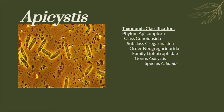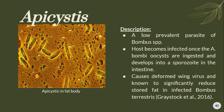The next species is Apocystis bombi. Apocystis bombi is a known parasite of bumblebees in the genus Bombus. Its host becomes infected when an oocyst is ingested by the bumblebee and it eventually develops into a sporocyte in the intestine.